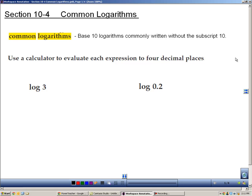Section 10-4 is about common logarithms. A common logarithm is a logarithm with base 10 and it's commonly written without the subscript. So instead of writing log base 3 of something, we just write log of something. The example down here would be log 3. What that really means is log base 10 of 3.